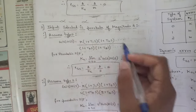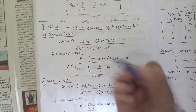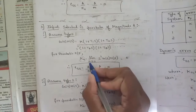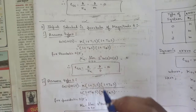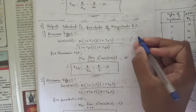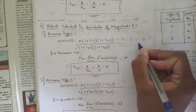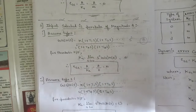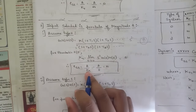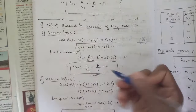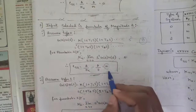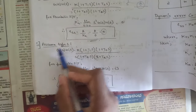Third case: the input selected is a parabola of magnitude a. For a Type 0 system with j = 0, the acceleration error coefficient ka = limit as s tends to 0 of s²·G(s)H(s) = s²·k/1. As s → 0, the numerator s² → 0, so ka = 0. The steady state error ess = a/ka = a/0 = infinity.